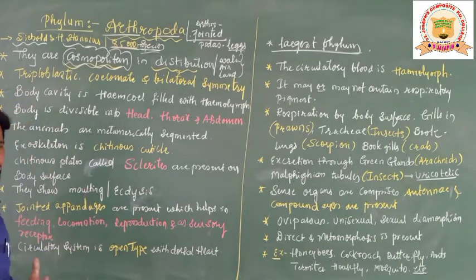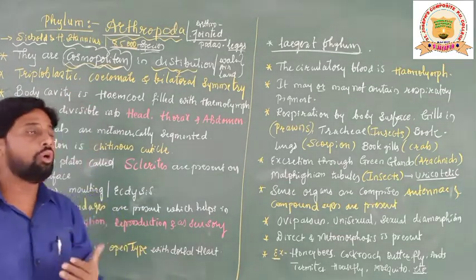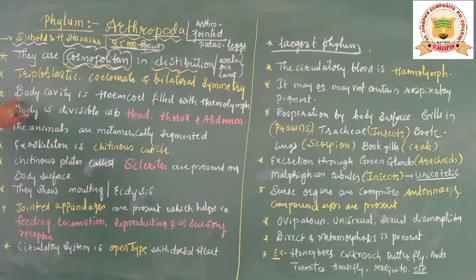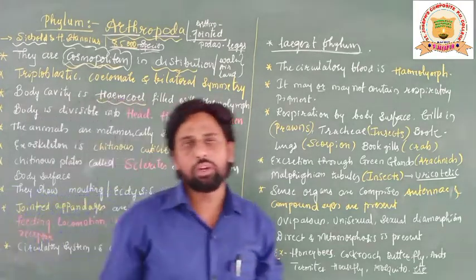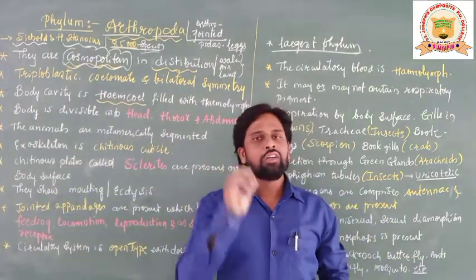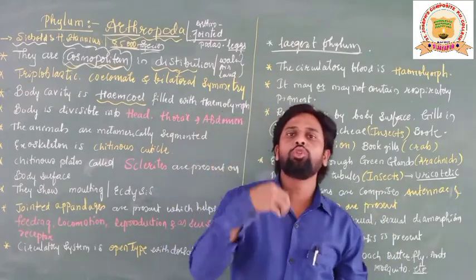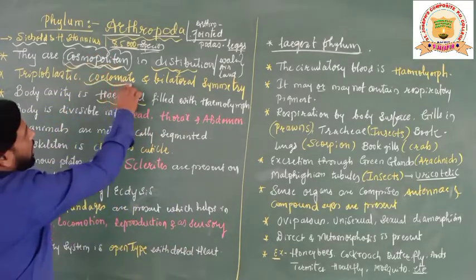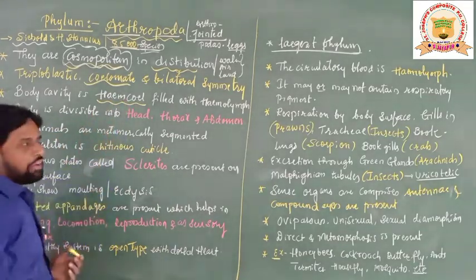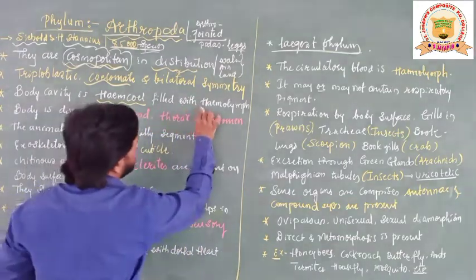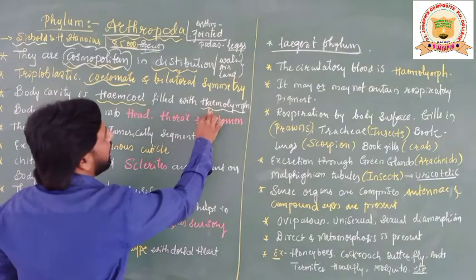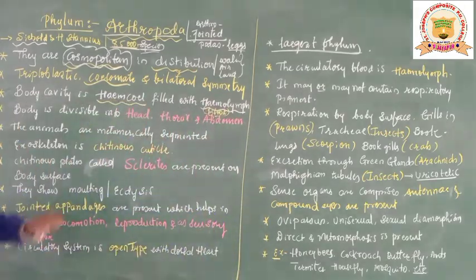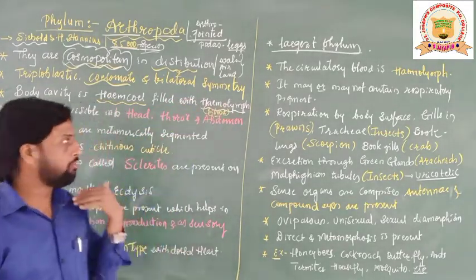Arthropoda animals are triploblastic, coelomate, and show bilateral symmetry — all these characters we have already discussed. Now, importantly, the body cavity in Arthropoda is a hemocoel. As in sponges there is an internal cavity called spongocoel, but in Arthropoda, being acoelomate in the true sense, the cavity present is called hemocoel, and this hemocoel is filled with hemolymph, which is nothing but blood.